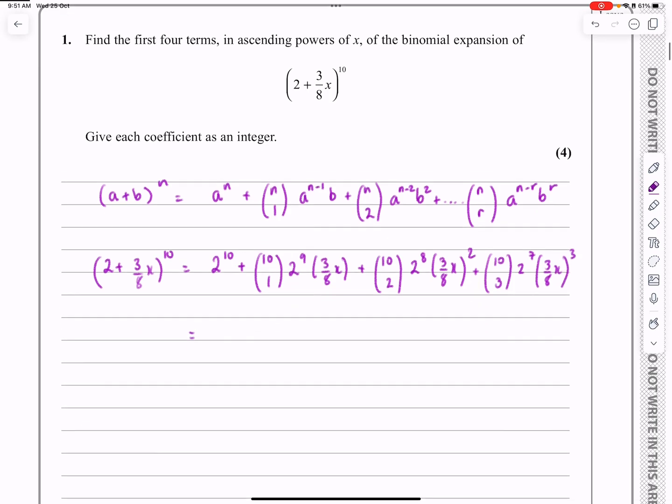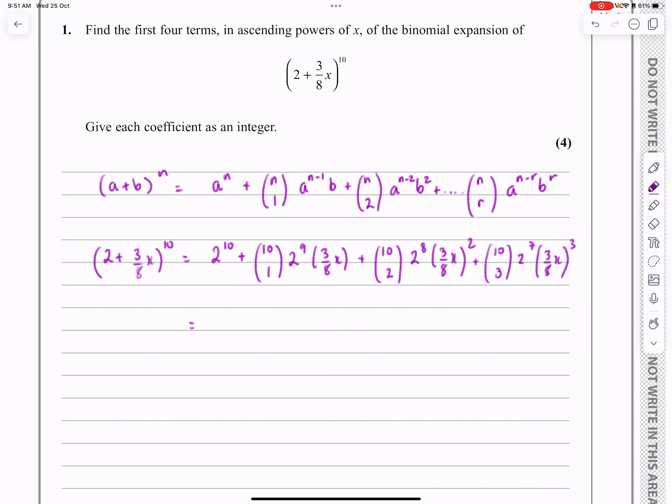Now in terms of me showing you what to do here, that's it really. You've just got to practice so that you're good at being able to multiply all these various different things out. 2 to the 10 is 1,024. There's no negatives in here, so I don't need to worry about the sign. I know my X's are going to go X, X squared, X cubed. So it's only the coefficients that I've got to work out. And 10C1 times 2 to the 9 times 3/8 works out to be 1920.